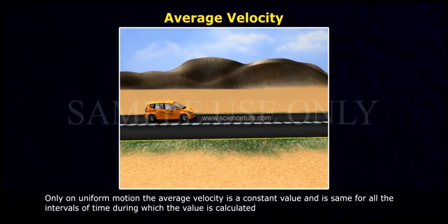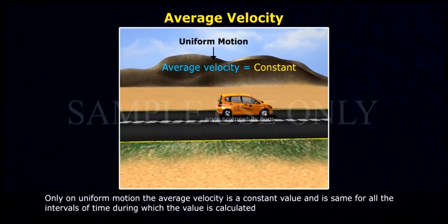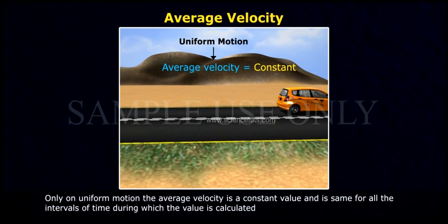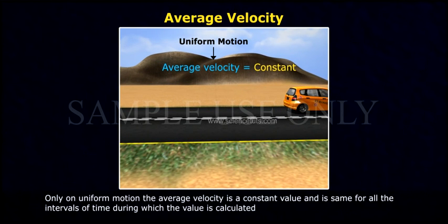Only in uniform motion, the average velocity is a constant value and is the same for all the intervals of time during which the value is calculated.